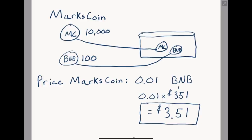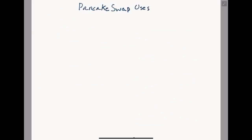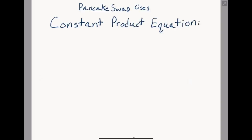The way DEXes calculate price is far more simple than how centralized exchanges do with order books. What PancakeSwap uses is the constant product market maker equation, which is super simple yet still has a number of benefits. The equation goes as follows: x times y equals k. It can be more intricate if you factor in transaction fees, but there's no reason to overcomplicate things for this video.